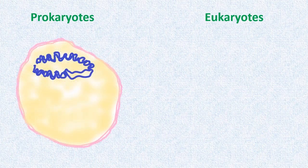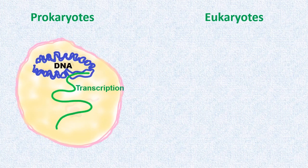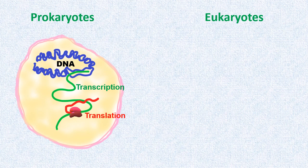As you can see here, in prokaryotes, membrane-bound nucleus is absent. Therefore in prokaryotes, both transcription and translation occur in the same cellular compartment. Here, the RNA produced by transcription is the actual messenger RNA that guides protein synthesis.